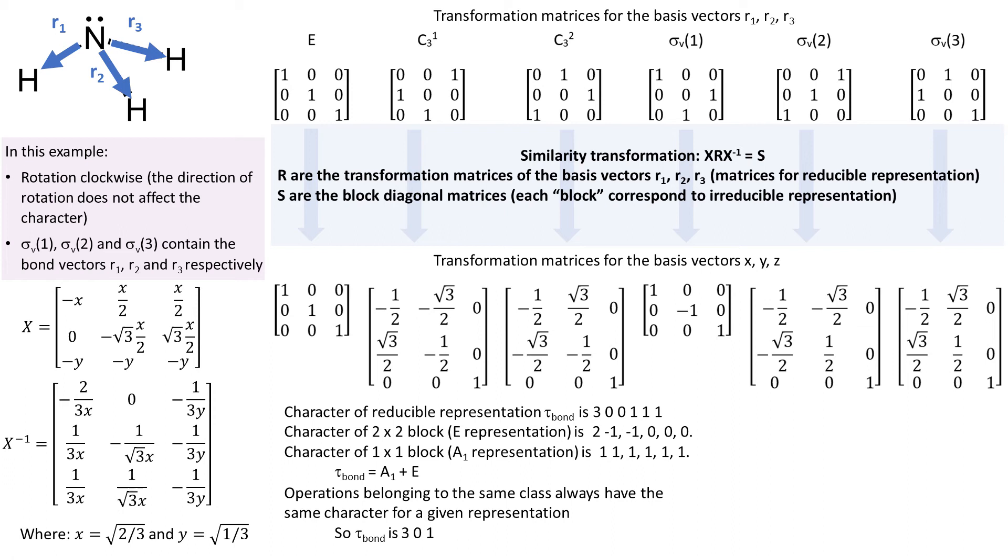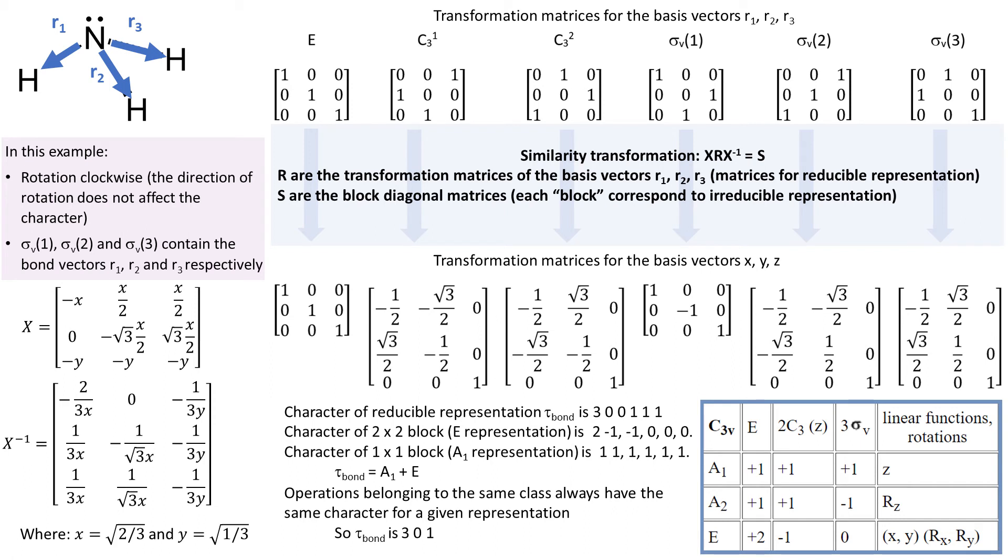So since operations belonging to the same class always have the same character for a given representation, we can shorten the reducible representation to just 3-0-1. And by looking at the character table for C3V, we can also see that the reducible representation is equal to E plus A1.